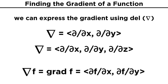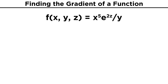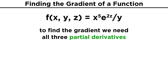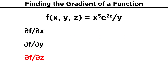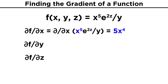Del has a variety of other uses that we will get into in another lesson, but for now let's consider one more example of a function and find its gradient. Consider the function f equals x to the fifth times e to the two z over y. To find the gradient, we will need all the partial derivatives: df dx, df dy, and df dz. Starting with x and treating y and z as constants, following the power rule, we bring down the five and subtract one from the exponent, leaving us with five x to the fourth times e to the two z over y, for our partial derivative with respect to x.